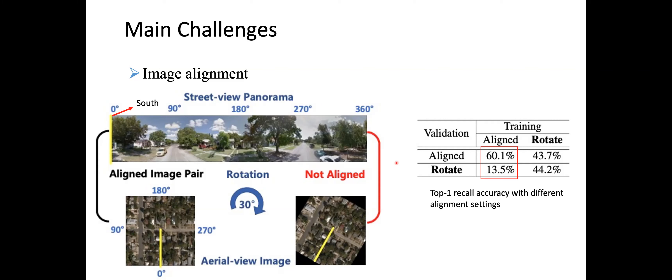We conducted experiments to investigate how alignment information impacts retrieval performance. If the model is trained with aligned image pairs and tested on aligned images, we get 61% top-one recall accuracy. But if the model is trained on aligned images and tested on randomly rotated aerial images — where alignment information is gone — performance drops dramatically from 60% to 13.5%. So alignment information has a big impact on retrieval performance.